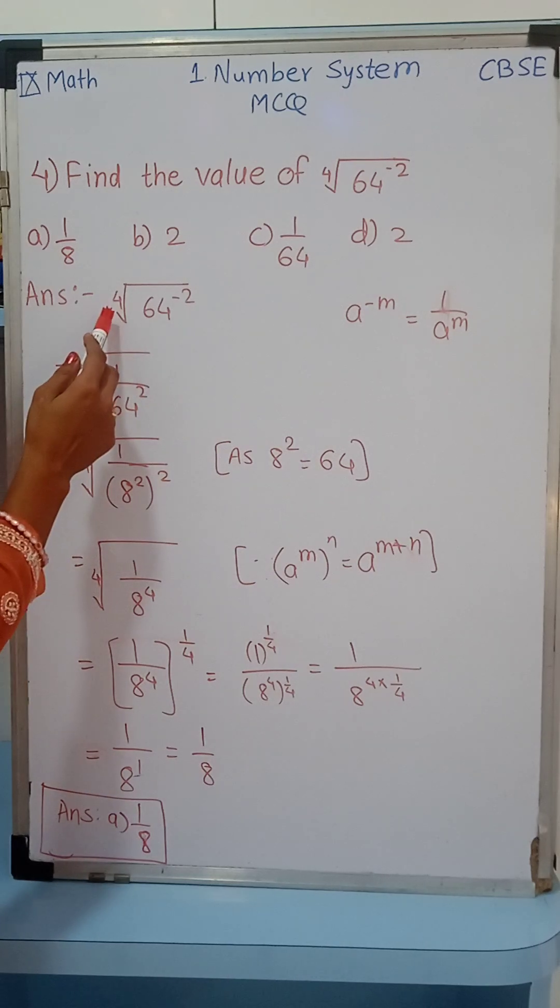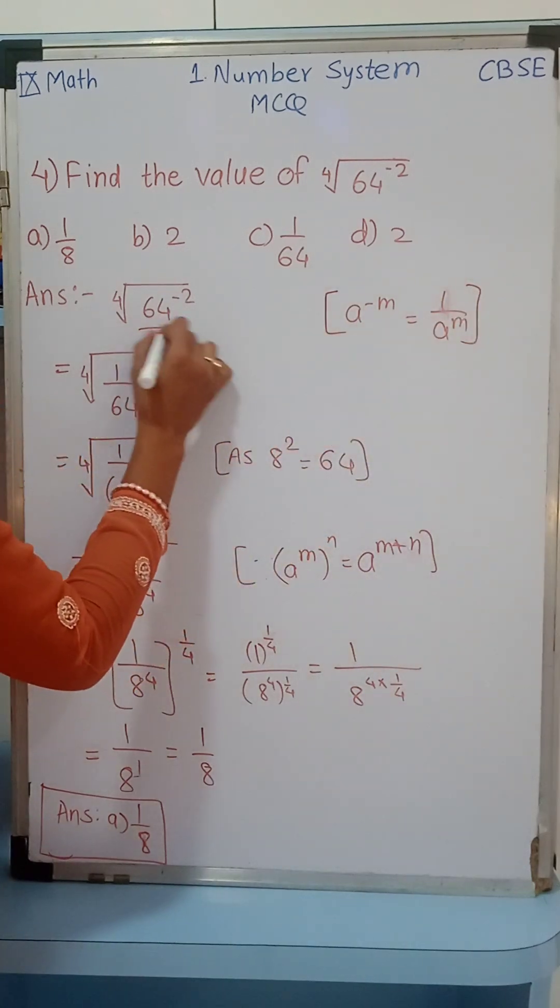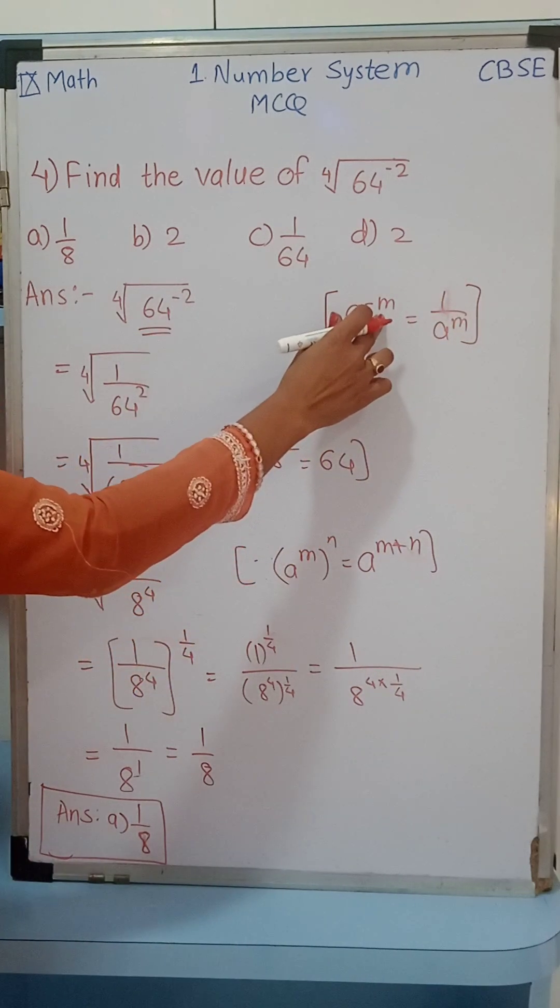Now let's check the fourth root of 64 raised to minus 2. First of all, we will sort out this minus sign. So how to solve it? a raised to minus m is